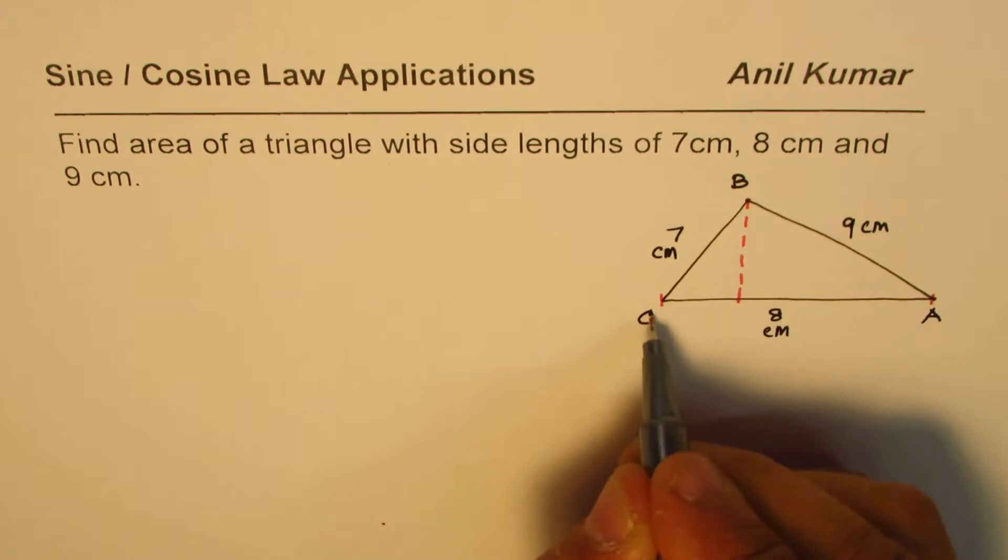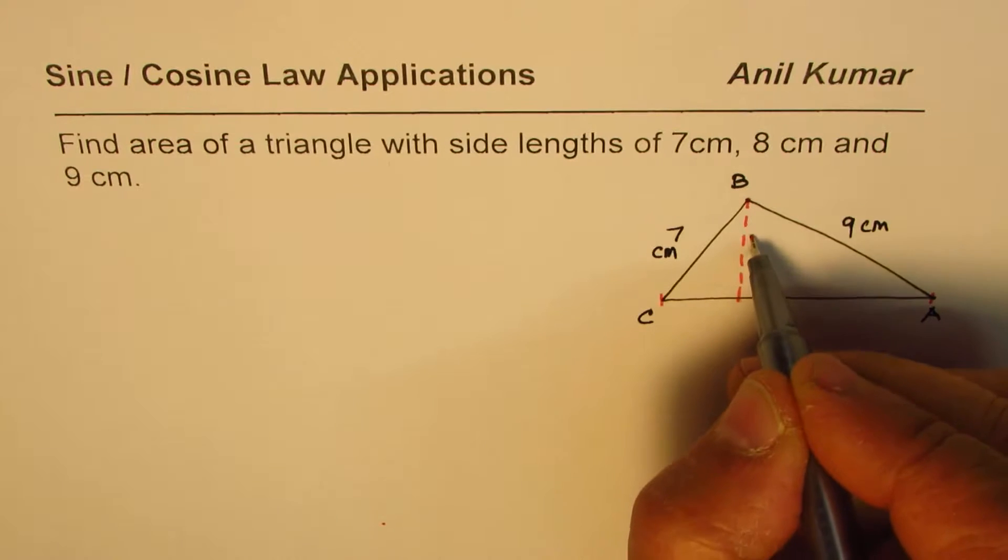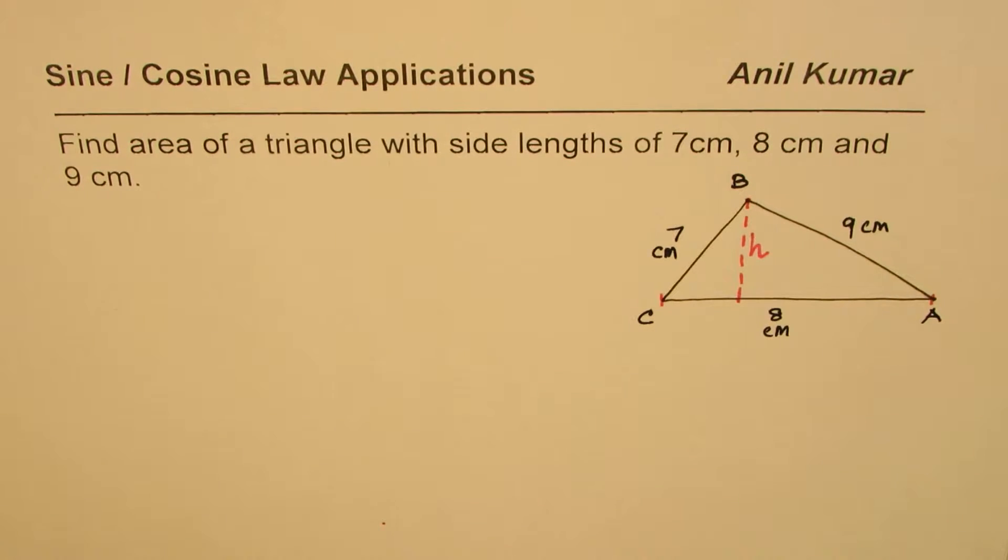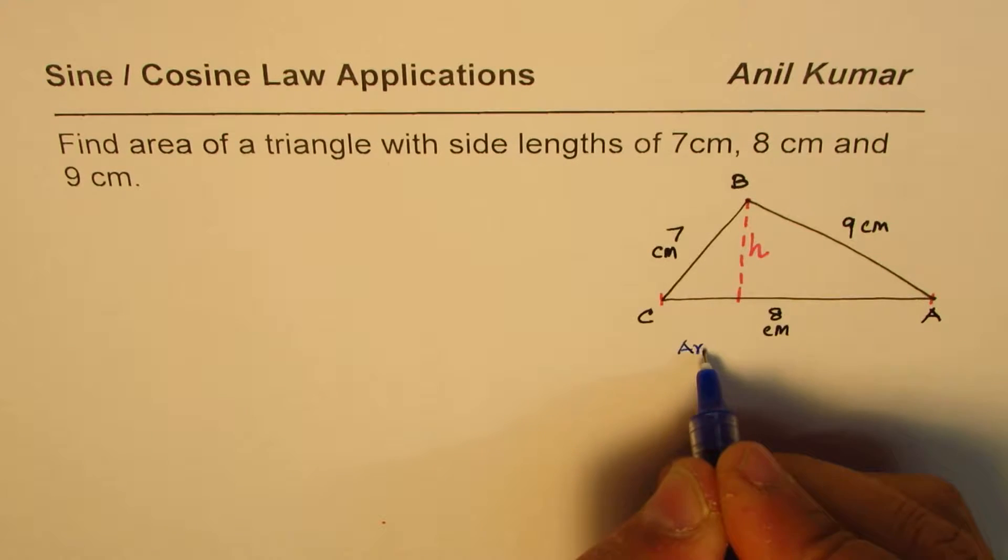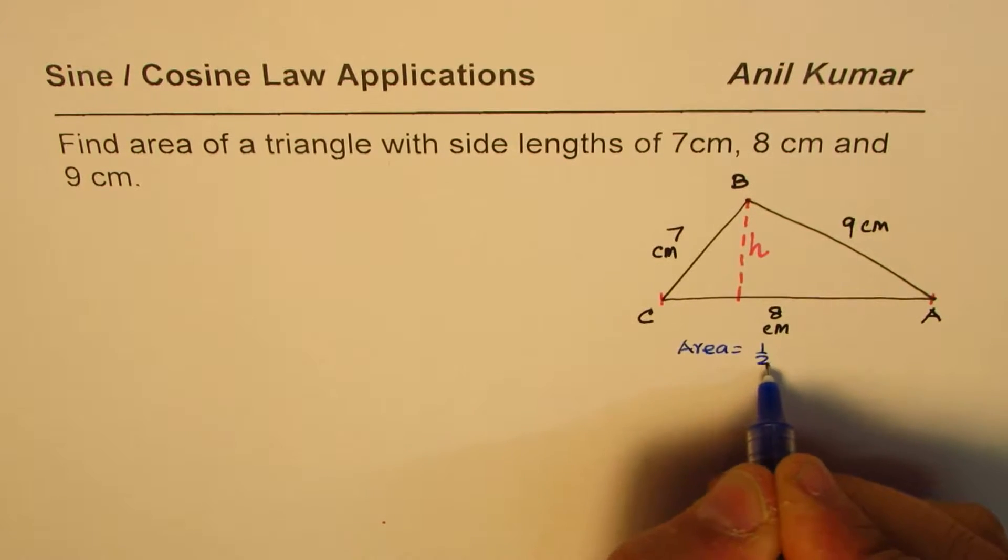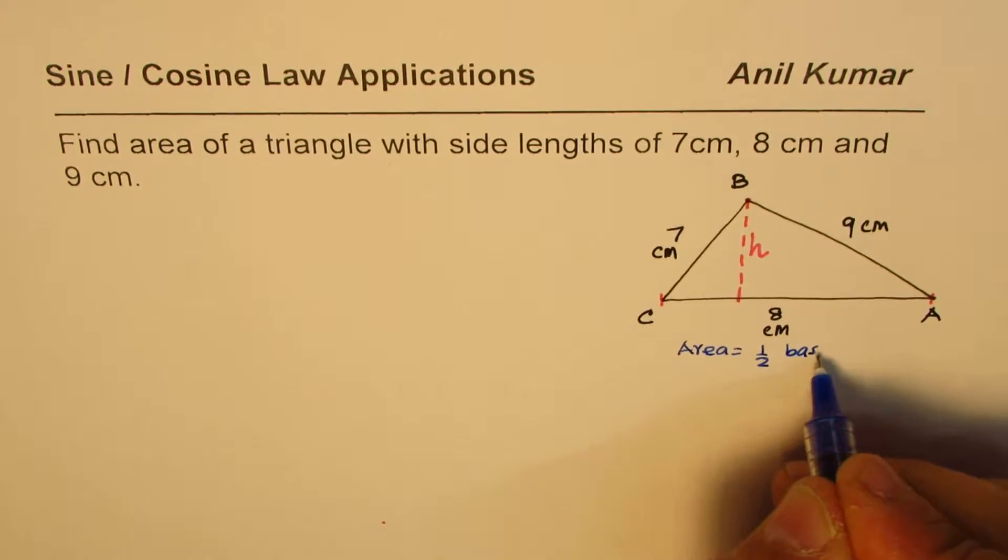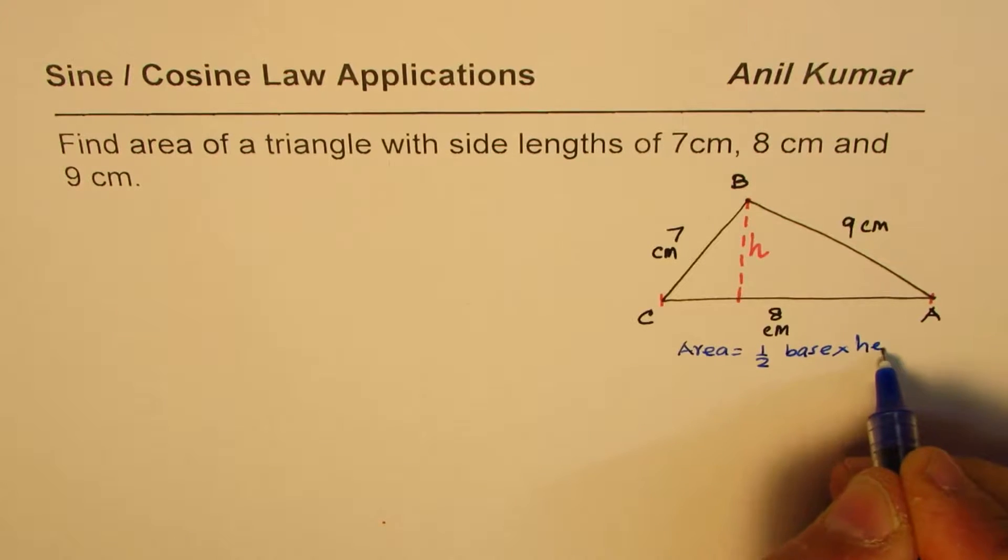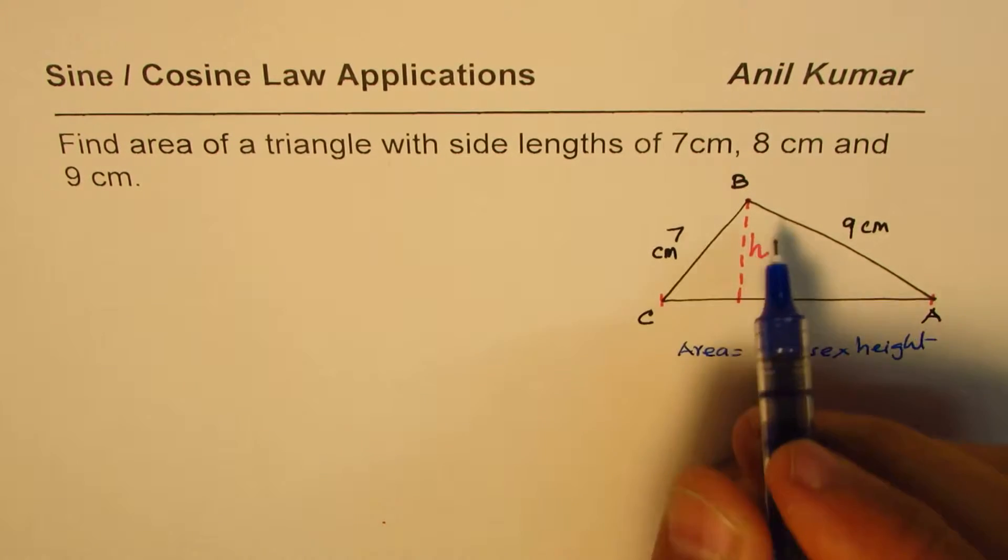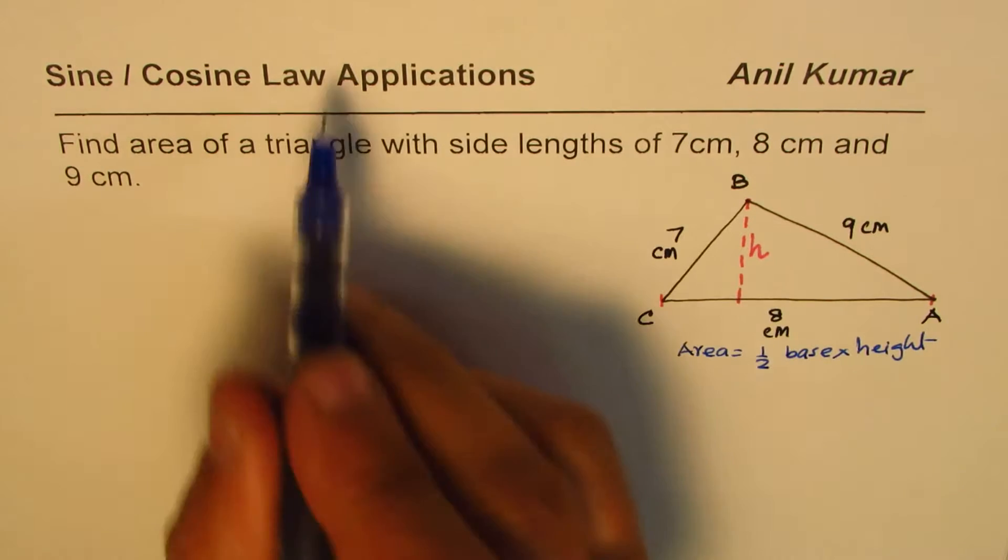The concept here is we know area is base into height divided by two. So basically we know the base in this case is 8 and we need to find this height h. Our approach is to find the height using sine or cosine law.